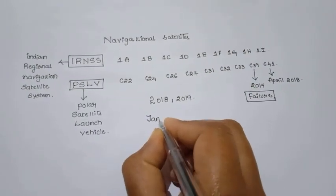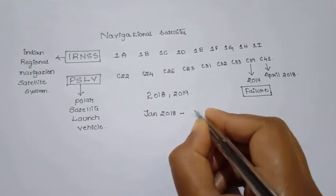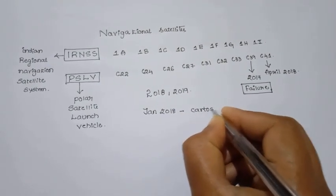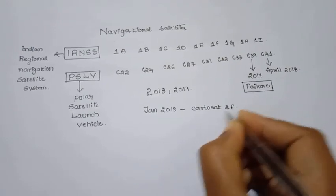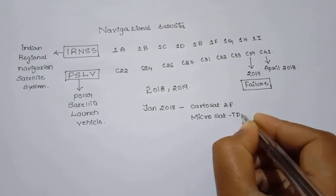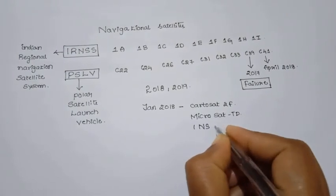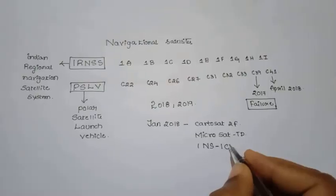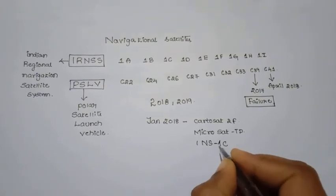In India, in 2018: Cartosat-2F, Microsat-TD, and INS-1C. These are Earth Observation Satellites.